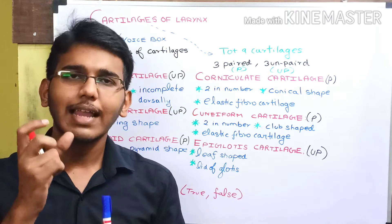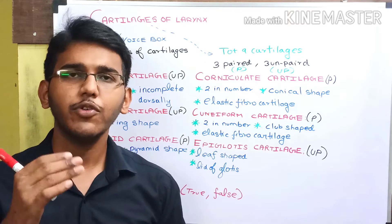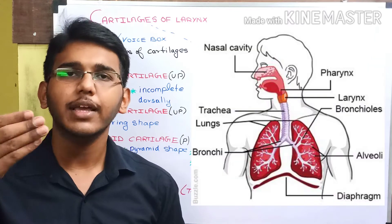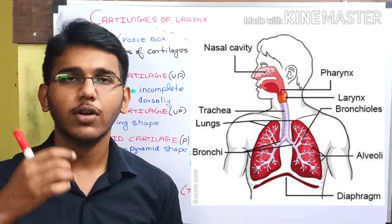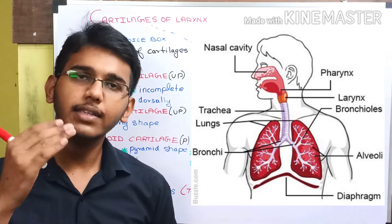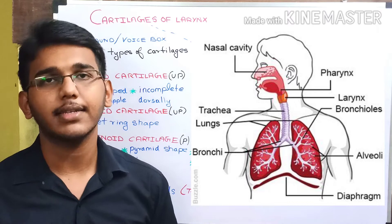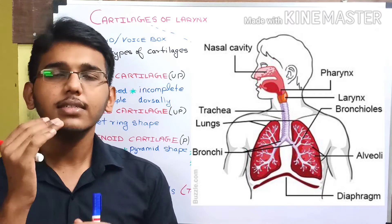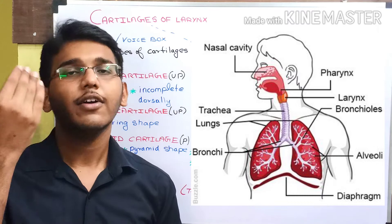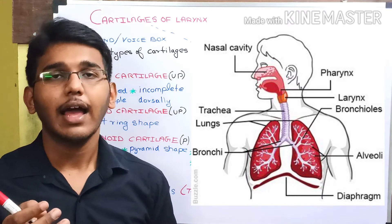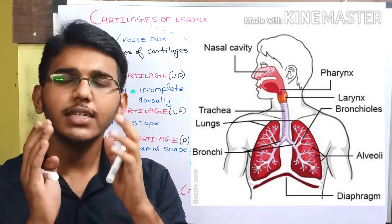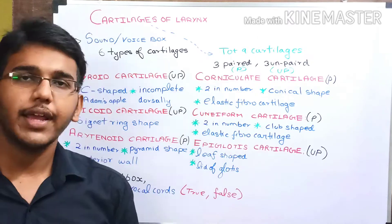Where is the larynx located? Whenever air from the external environment enters our nostrils, it first enters the nasal cavity, then the pharynx, then the larynx. The larynx is present in between the trachea and the pharynx, and is the upper part of the trachea made up of 6 types of cartilages.